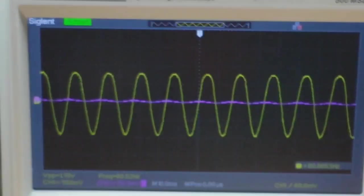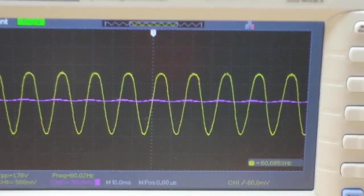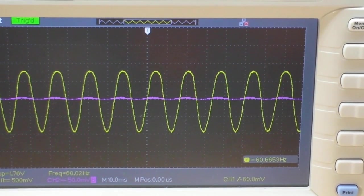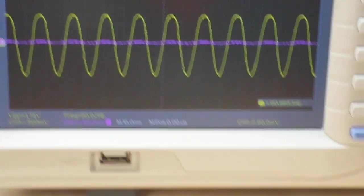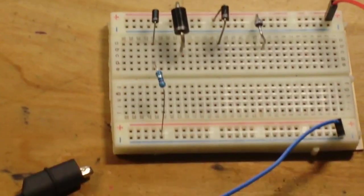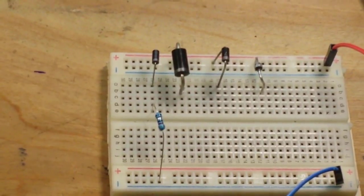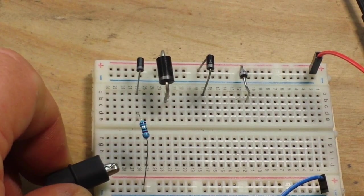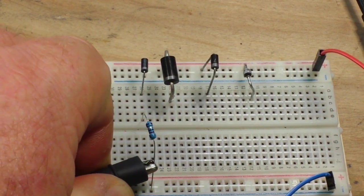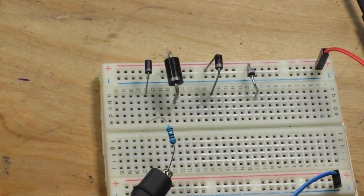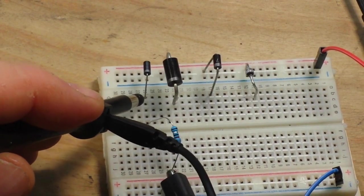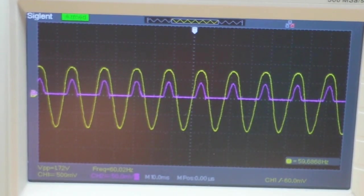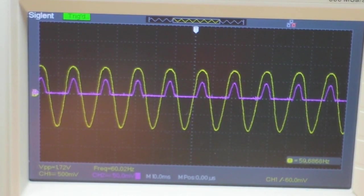And if we look up here at the oscilloscope, you can see channel one, the yellow, is the sine wave that we're inputting, the 60 hertz, 2 volt peak to peak. So what we're going to do is we'll clip the ground lead here to this ground connection and we'll probe the output of the diode. And then we're going to take a look at this on the oscilloscope.